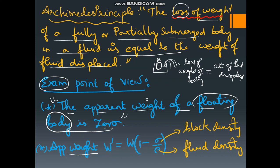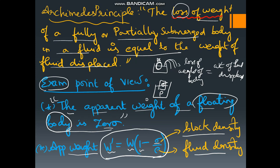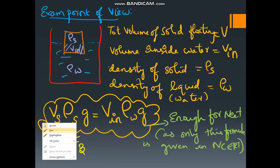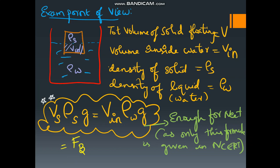Now let us see the apparent weight formula. Suppose we are taking a liquid and dipping a box into it. The liquid density is rho and the box or solid density is sigma. Then apparent weight w-dash is equal to the initial weight of the block multiplied by one minus sigma over rho, where sigma is the block density and rho is the fluid density. This is the formula you must remember: w' = w × (1 − block density / fluid density). This formula is given in NCERT.